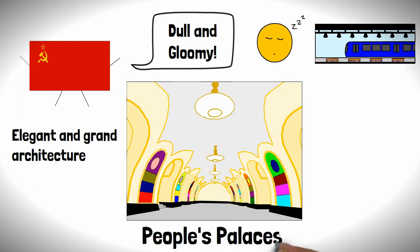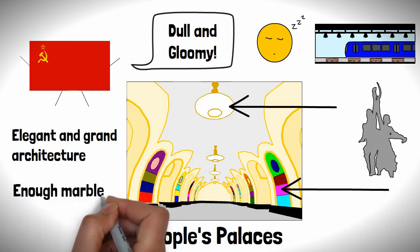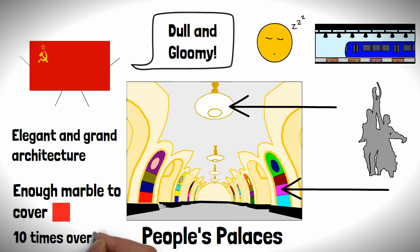The stations, dubbed people's palaces, were to be kitted out with chandeliers, mosaics, statues, and enough marble to completely cover Red Square ten times over.